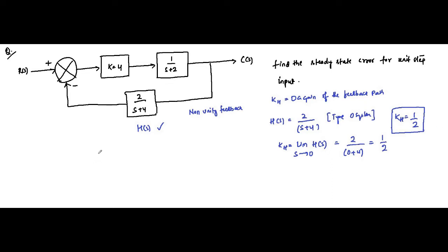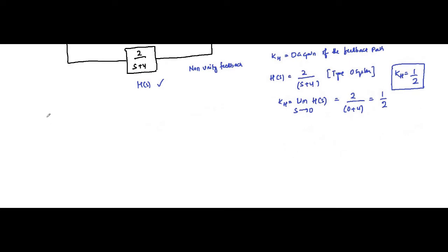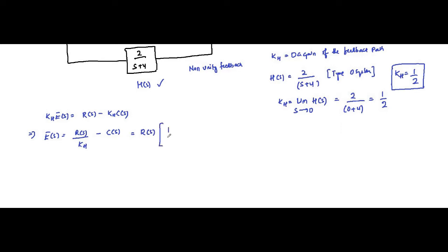As we discussed in the previous video on the basic concepts of non-unity feedback systems, the error signal E(s) is equal to R(s)/KH minus C(s). When we divide by KH on both sides, that becomes R(s) times [1/KH minus C(s)/R(s)]. Now C(s)/R(s) is the closed-loop transfer function, so E(s) = R(s) times [1/KH minus G(s)/(1 + G(s)H(s))].